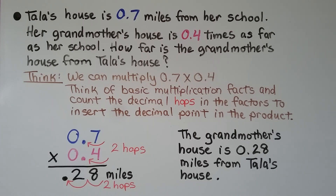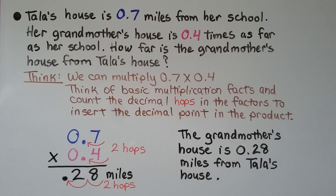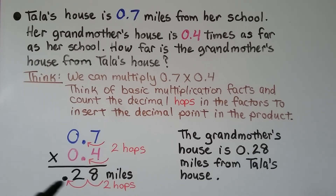Tala's house is 7 tenths miles from her school. Her grandmother's house is 4 tenths times as far as her school. How far is the grandmother's house from Tala's house? We multiply 7 tenths times 4 tenths. We think of the basic multiplication facts: 7 times 4 is 28. We count the decimal hops in the factors to insert the decimal point in the product. We have 28 hundredths miles, because there are 2 hops. The grandmother's house is 28 hundredths miles from Tala's house.